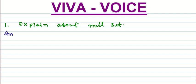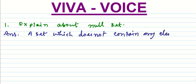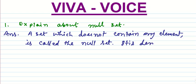Answer here. A set which does not contain any element is called the null set. It is denoted by Φ or curly brackets.